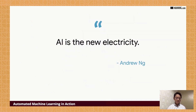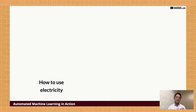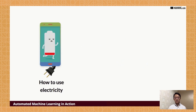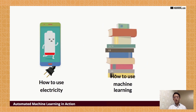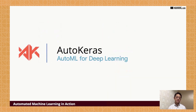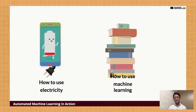We all say AI is the new electricity today, but using AI is far from as easy as using electricity. If your phone battery is dead, you simply plug it into the wall. But if you want to use machine learning, you have to go through numerous tutorials, curriculums, and books to learn the theory and how to use the libraries. That's why they are developing AutoKeras — an AutoML library for deep learning.